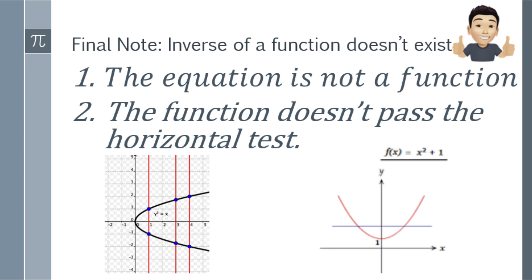Pangalawa naman, the function doesn't pass the horizontal test. Okay, function na, kaso hindi sya pumasa sa horizontal test. Katulad ng function na x square plus 1, yung second image. Kapag nag-horizontal test ka, at nag-intersect sya sa two or more points, hindi sya pasado sa horizontal test. That means, yung function na yun, hindi ka pwedeng kumuha ng inverse nun. So the inverse doesn't exist on that function.